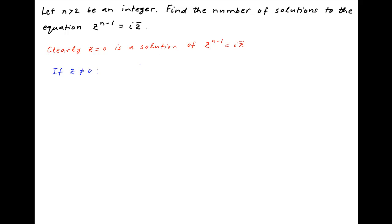Now consider the case that z is not equal to 0. The given equation is z raised to the power n minus 1 is equal to i times the conjugate of z. Taking the absolute value of both sides, the left-hand side is the absolute value of z raised to the power n minus 1, and the right-hand side is the absolute value of i times the absolute value of the conjugate of z. The absolute value of i is equal to 1, and the absolute value of the conjugate of z equals the absolute value of z.